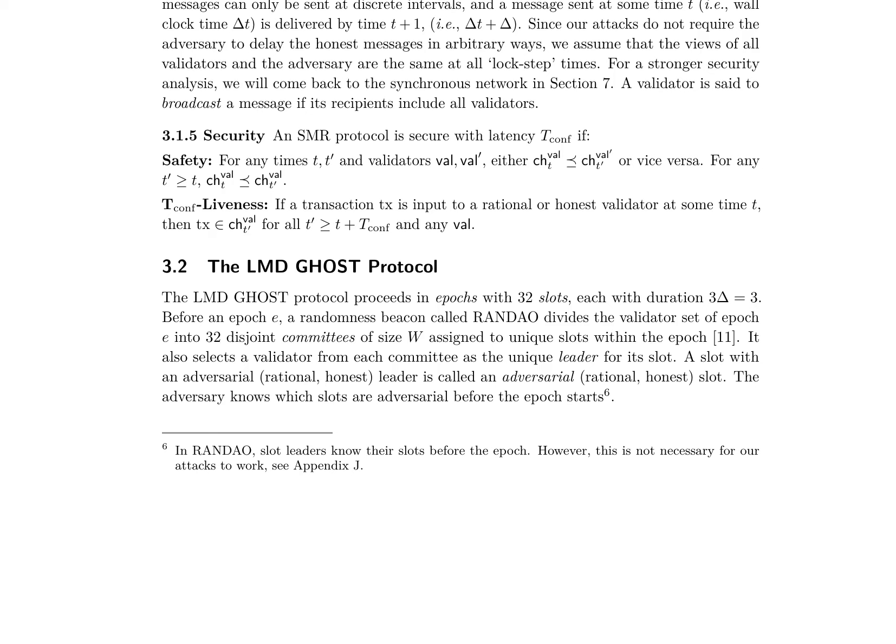The authors define security for an SMR protocol, which requires safety and liveness properties. Safety ensures that for any times T and T′, and validators VAL and VAL′, either the confirmed chain of VAL at time T is a prefix of the confirmed chain of VAL′ at time T′, or vice versa. Liveness ensures that if a transaction TX is input to a rational or honest validator at some time T, then TX is included in the confirmed chain of any validator at time T′ ≥ T + TKIF.